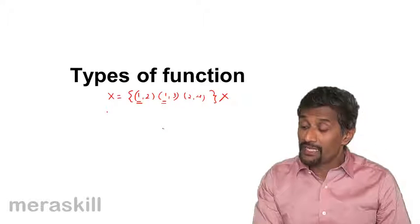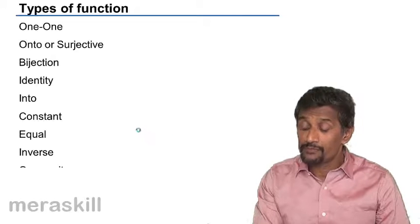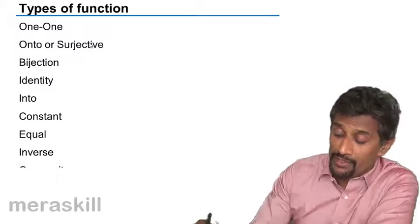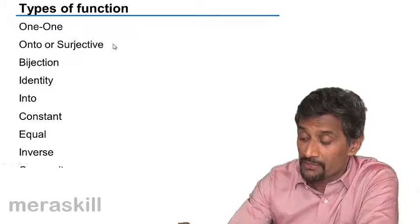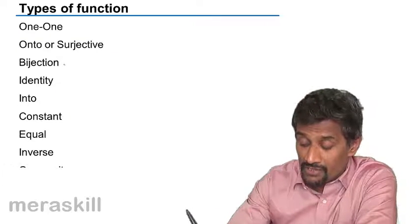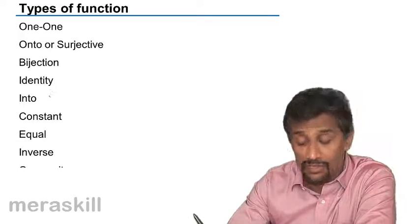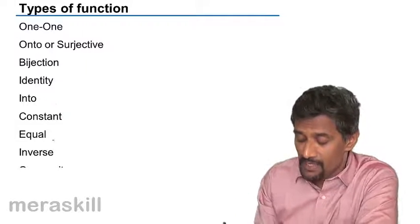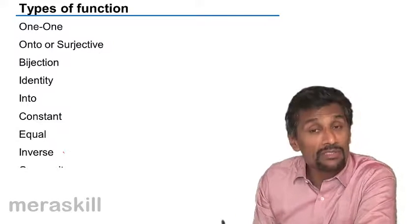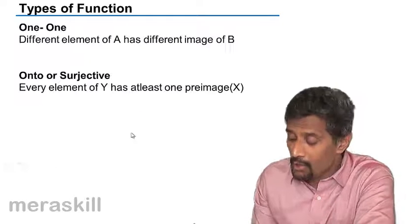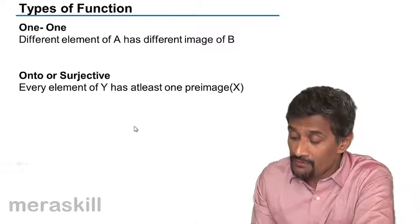Based on this, there are various types of functions: one-to-one (1,1) function, onto or surjective function, bijection function, identity function, into function, constant function, equal functions, and inverse functions. Let us see what these one-to-one functions are.